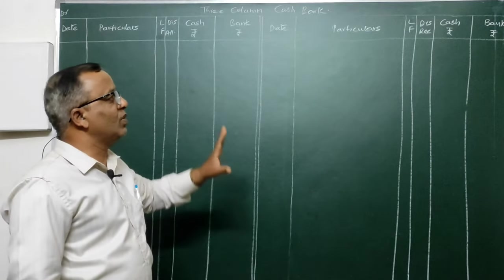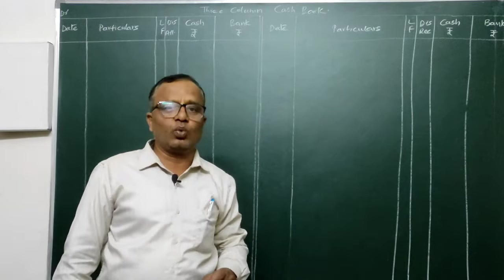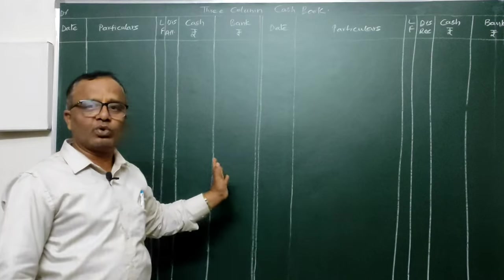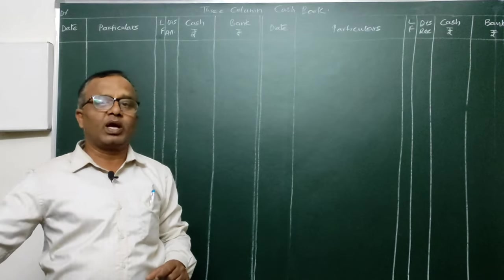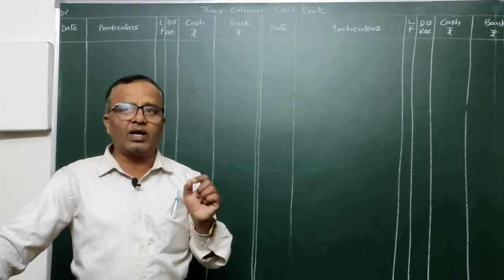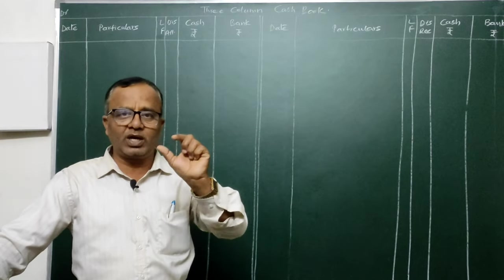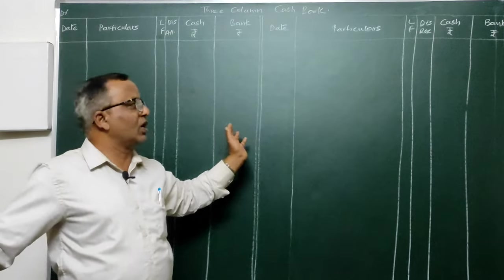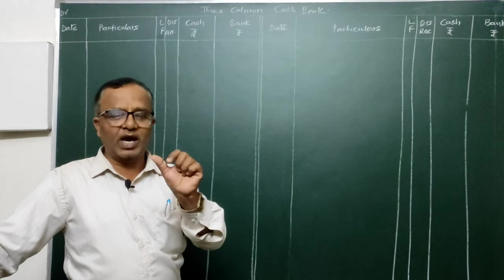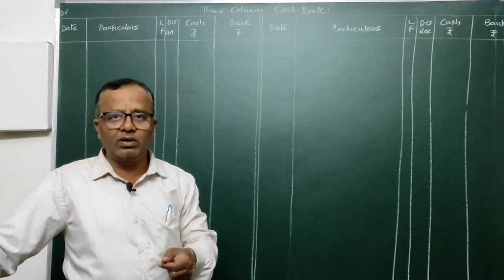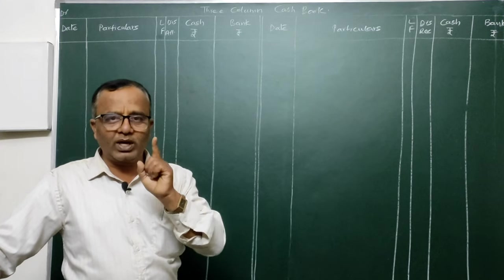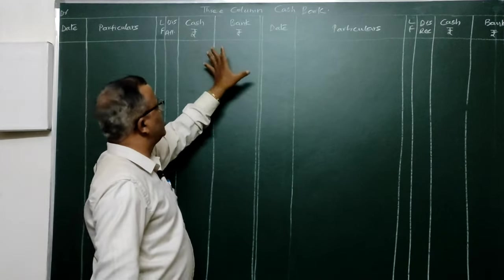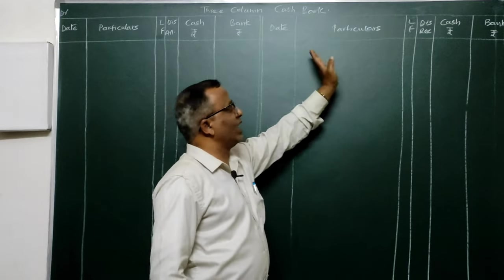Apart from this, when doing a three column cash book, one transaction where the two-fold effect is posted on the opposite side in the same cash book — those transactions are called contra entries. Contra entries occur when the debit and credit of a transaction are posted on opposite sides of the same account. This contra entry normally comes when both cash and bank are involved in a transaction, such as when cash is deposited into bank — entry: Bank Account Dr. To Cash Account.